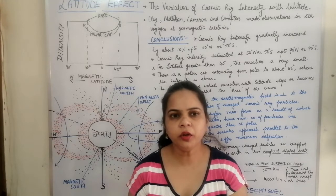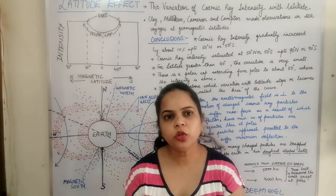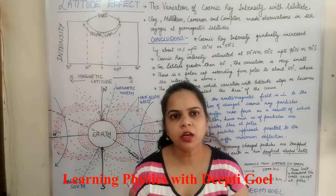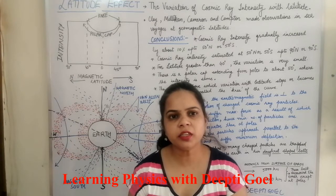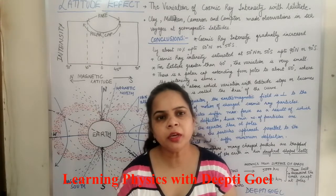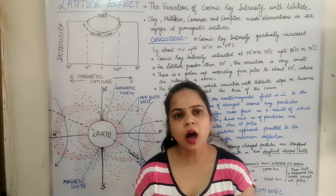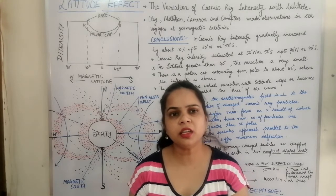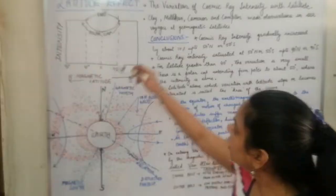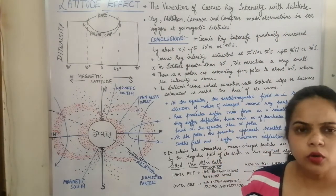Now we are going to discuss the latitude effect. You saw the altitude effect — the variation of cosmic ray intensity with respect to height at a particular latitude. Now we shall discuss how cosmic ray intensity varies with latitude. The latitude effect is the variation of cosmic ray intensity with latitude.